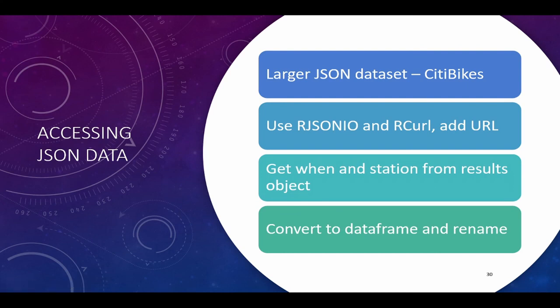Your book has some great examples on additional JSON data available to you — it might be really great to read through, especially with the assignment and the lab. It goes through a large data set of New York City bikes. The nice thing is that no matter what the size of the data set, the steps are going to be exactly the same. You're going to make the URL, obtain the station information from the result object, convert it to a data frame, and rename it. All these steps are the same no matter what the size of your data set.